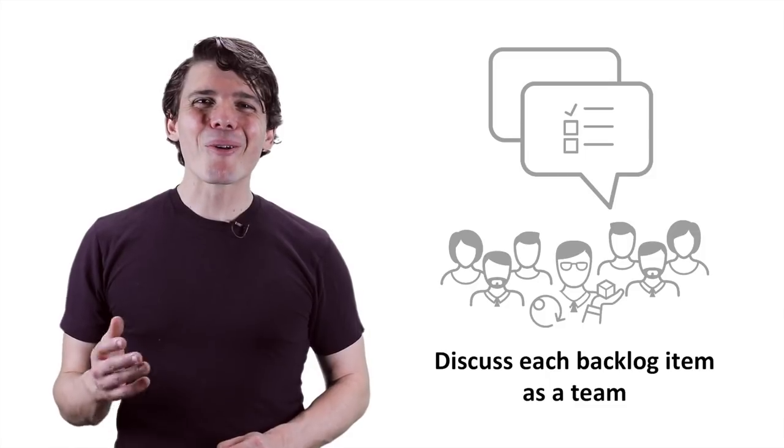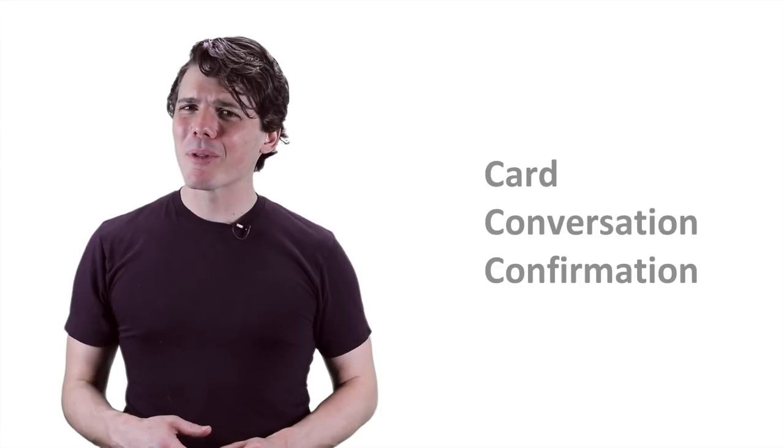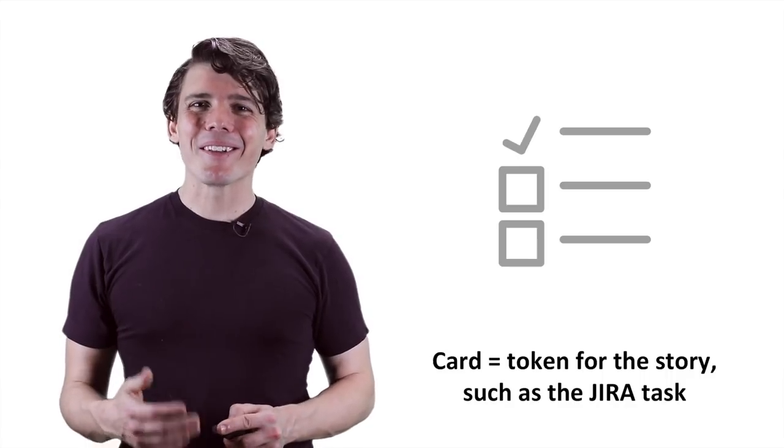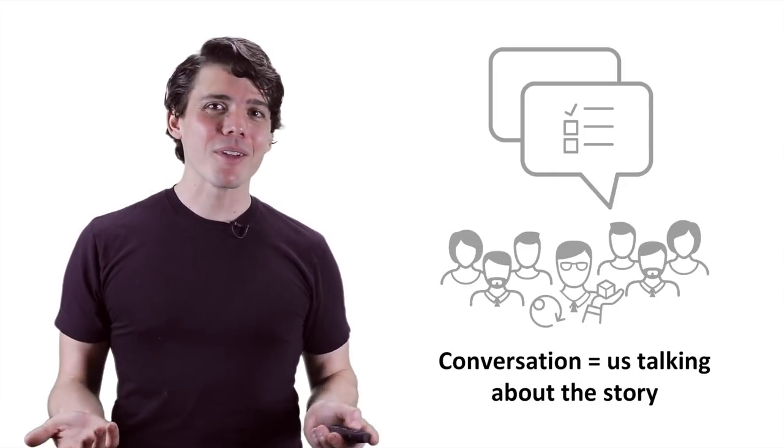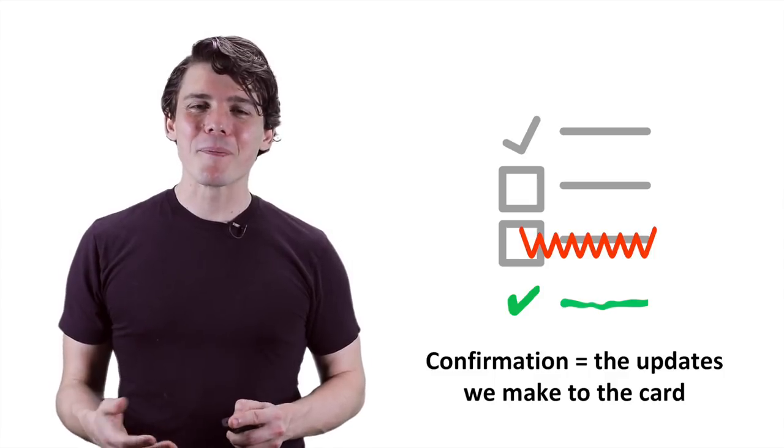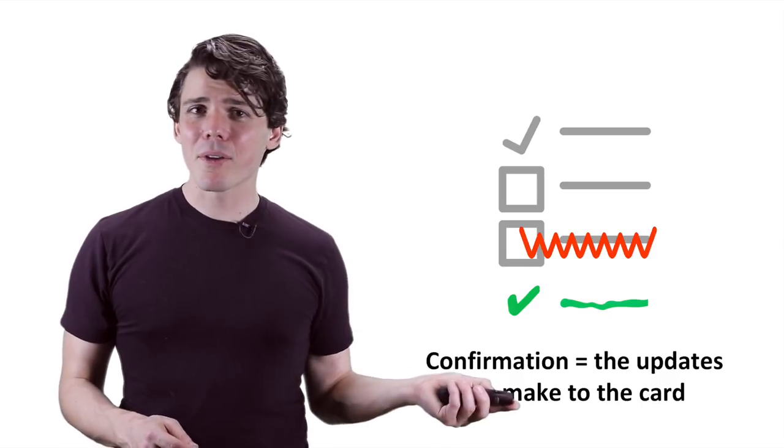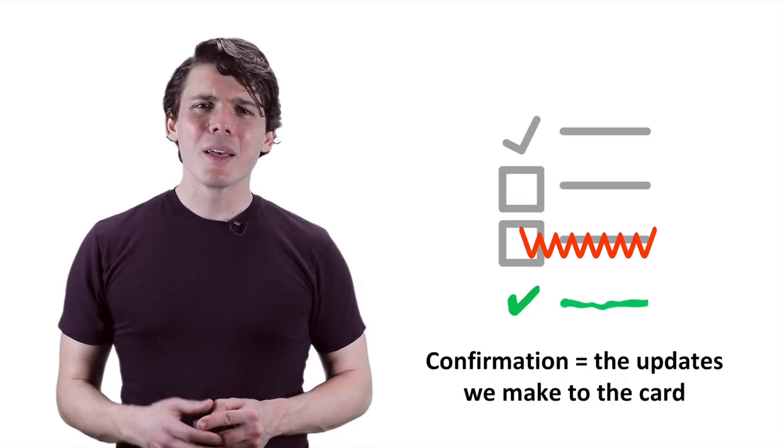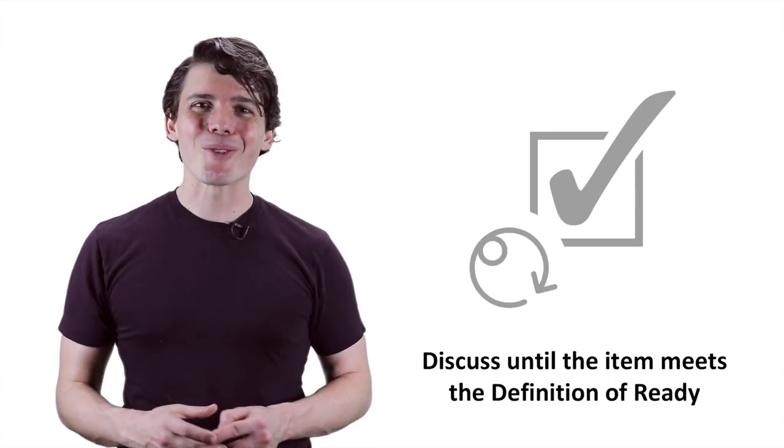To begin, gather the whole team and start discussing your highest ranked backlog item. Remember the phrase card, conversation, confirmation? The card is the index card, sticky note, or software entry that acts as the token for our discussion. Our discussion is the conversation. The updates we make to the card, especially the acceptance criteria, lead to the confirmation. What's in scope? Out of scope? Dependencies? Target ship date? Keep talking about and updating each backlog item until it meets your team's definition of ready.